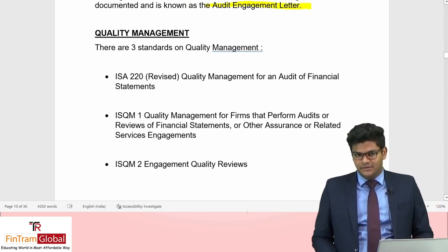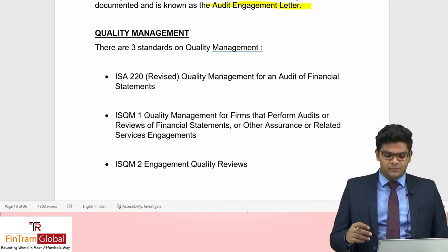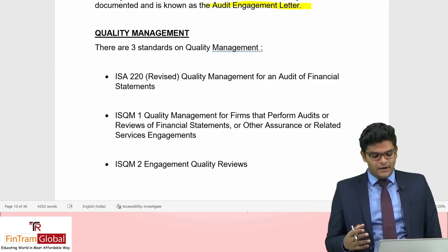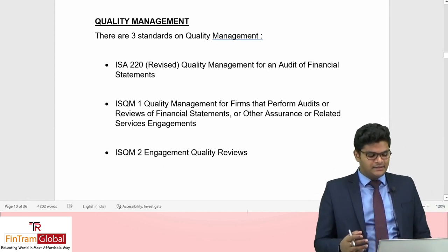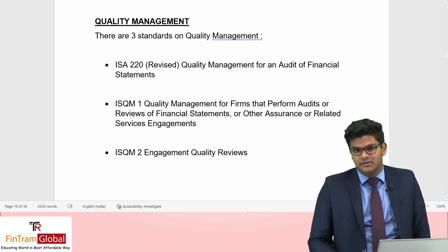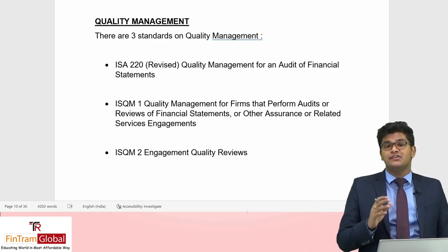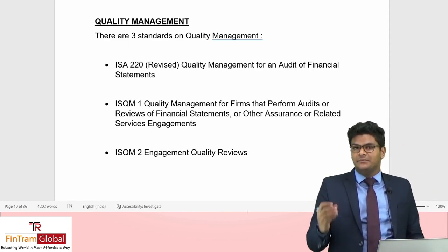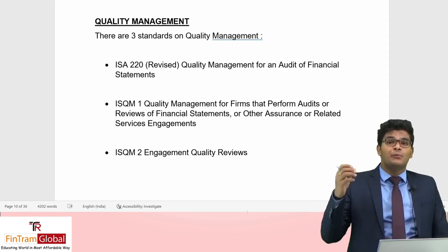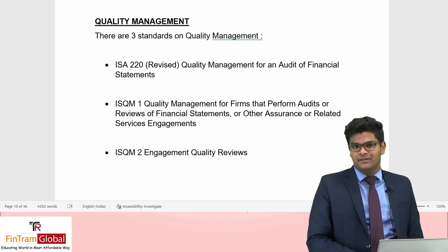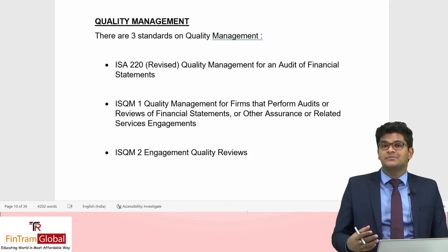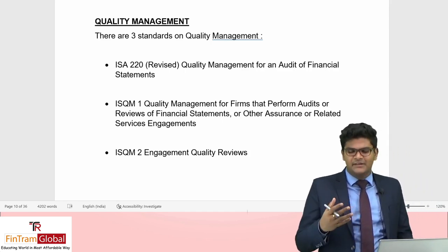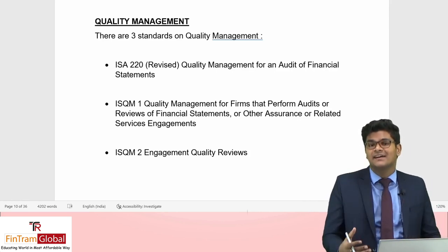When it comes to quality management, there are three standards to keep in mind: ISA 220 Revised (Quality Management for an Audit of Financial Statements), ISQM 1 (Quality Management for Firms that Perform Audits or Reviews of Financial Statements and other assurance engagements), and ISQM 2 (Engagement Quality Control Reviews). The primary difference is that ISA 220 focuses on individual-level quality management, ISQM 1 focuses on quality management at a firm level, and ISQM 2 focuses on engagement quality reviews.